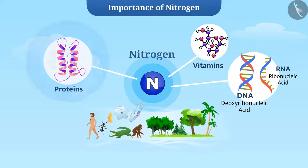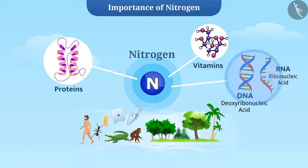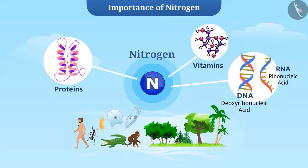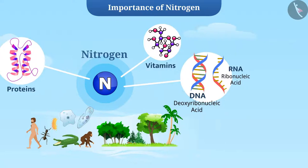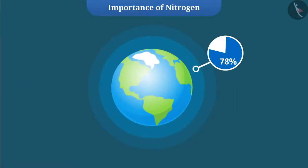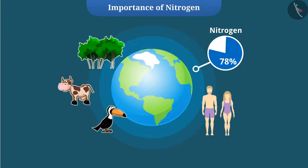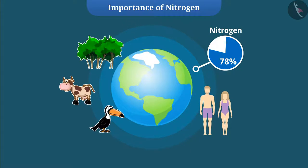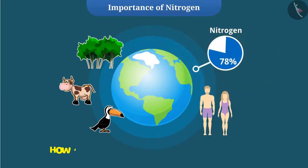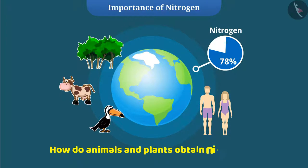These compounds are essential for growth, maintenance, and reproduction. About 78% of the Earth's atmosphere is nitrogen gas. Though there is plenty of nitrogen in our atmosphere, many living organisms — including us — cannot use nitrogen directly from the atmosphere. So how do animals and plants obtain nitrogen?